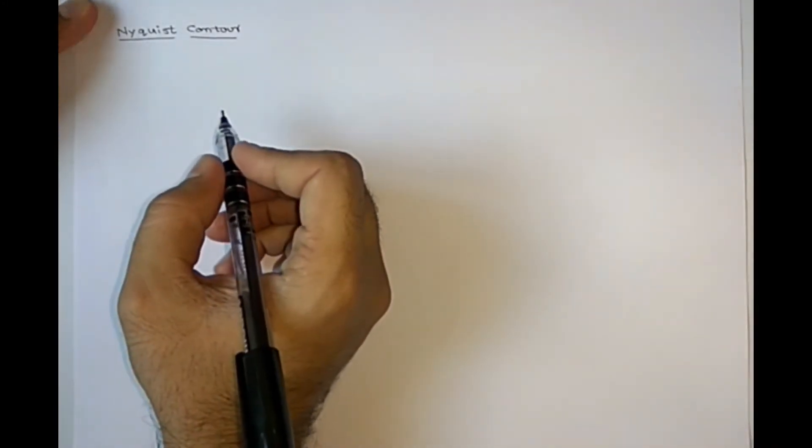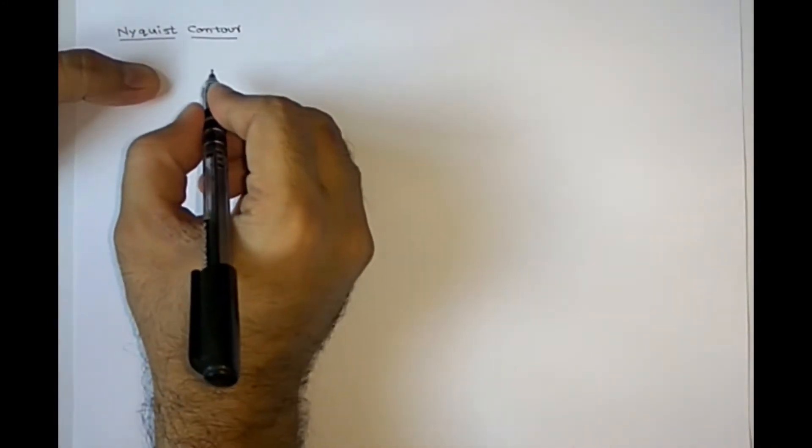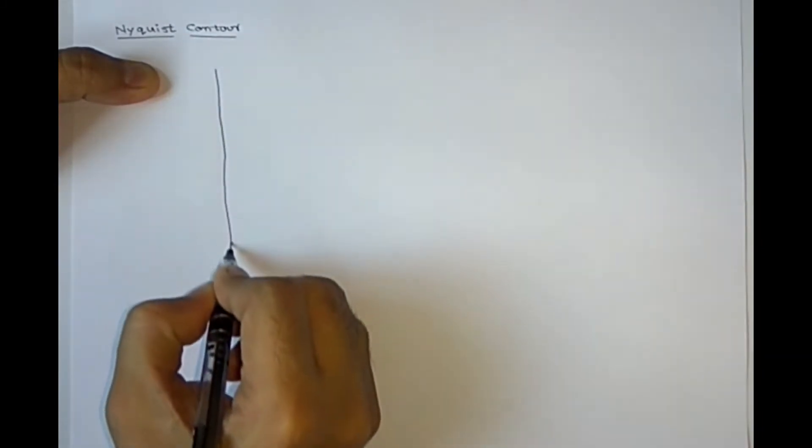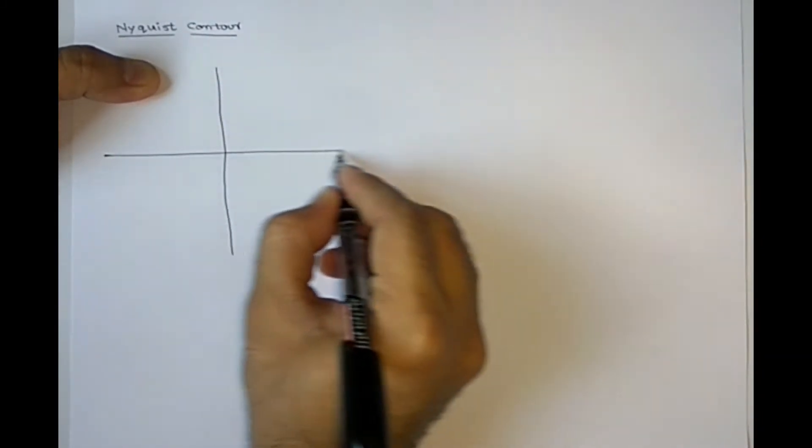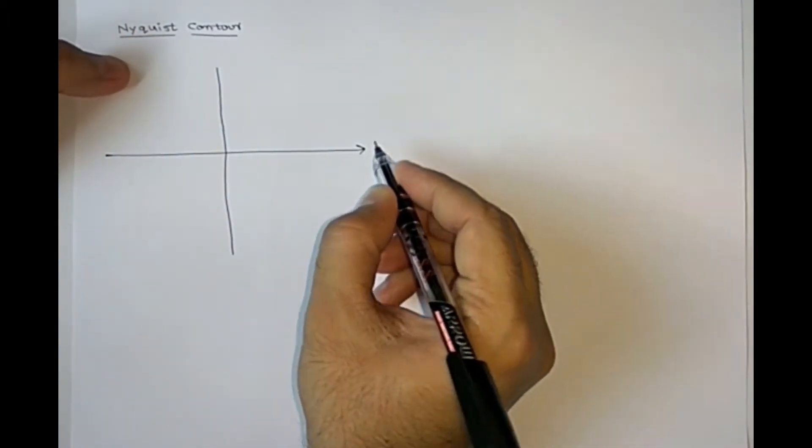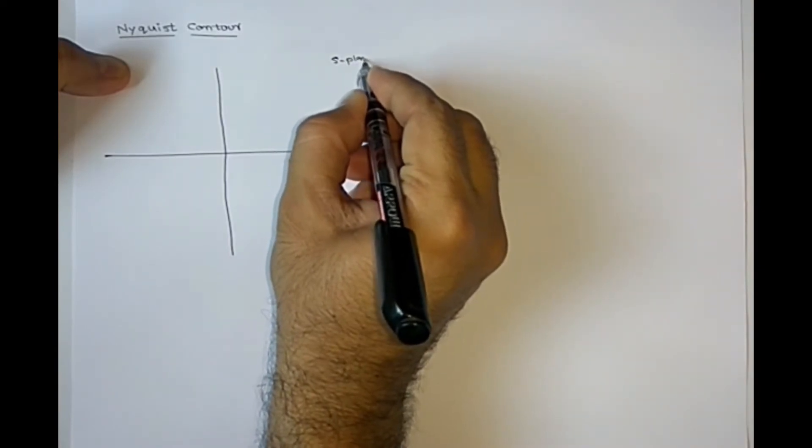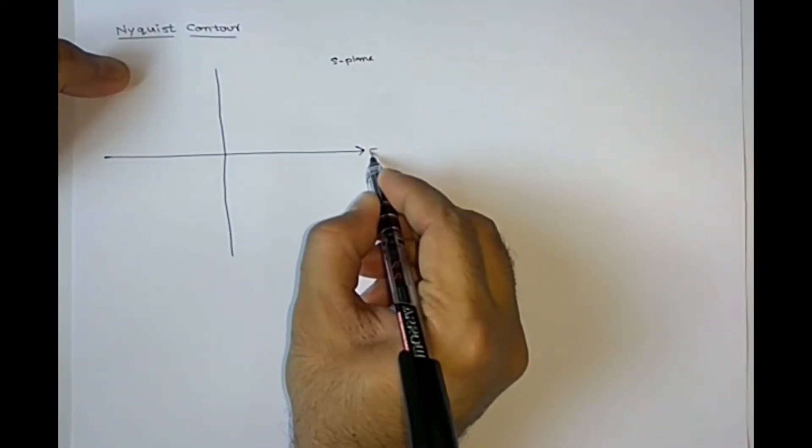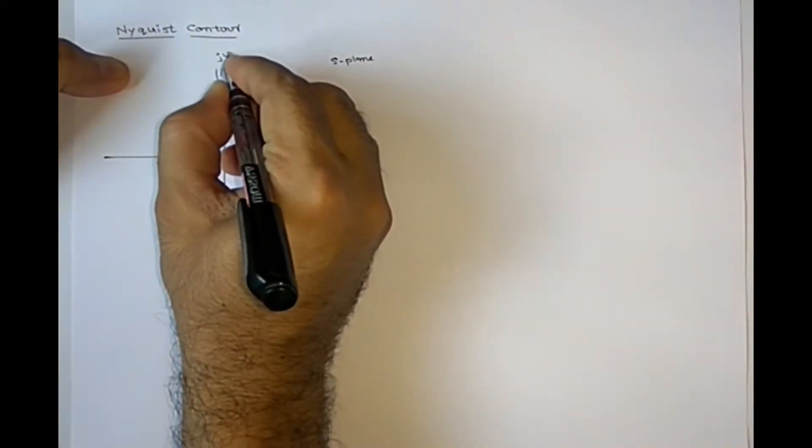So here, what is Nyquist contour? We have seen different contours mapping, right? But Nyquist contour is one constant contour. Let us see how it will be. So this is S-plane, this is real axis, this is imaginary axis.